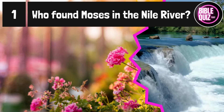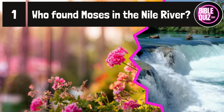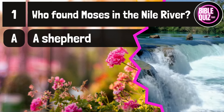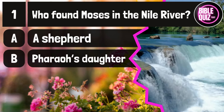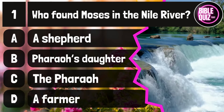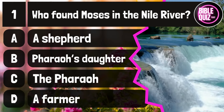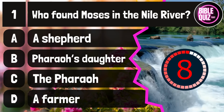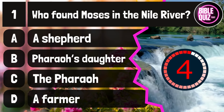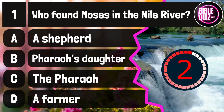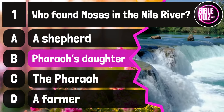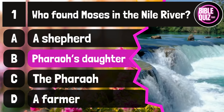Question number 1. Who found Moses in the Nile River? Option A: A shepherd. Option B: Pharaoh's daughter. Option C: The Pharaoh. Option D: A farmer. Time to think. The answer is option B: Pharaoh's daughter.